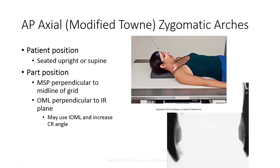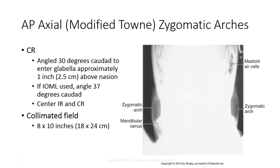For the AP Axial Modified Towne view of the zygomatic arches, place the patient in a seated upright or supine position. The MSP should be placed perpendicular to the midline of the grid, and the OML should be perpendicular to the IR plane. You may also use the IOML and increase the CR angle by 7 degrees if the patient is unable to flex sufficiently to place the OML perpendicular to the IR. The CR should be angled 30 degrees caudad to enter at the glabella, approximately 1 inch above the nasion.